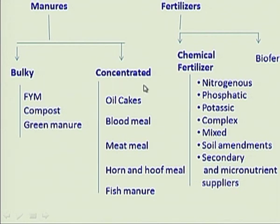Under concentrated manures, oil cakes, blood meal, meat meal, horn and hoof meal, and fish manures are important.